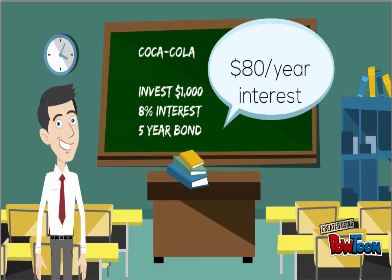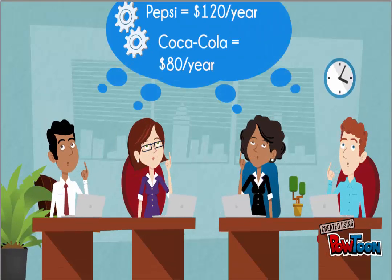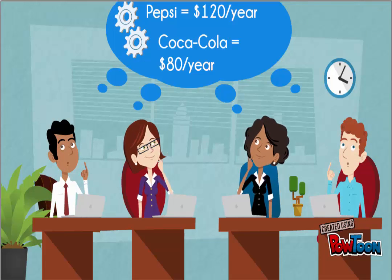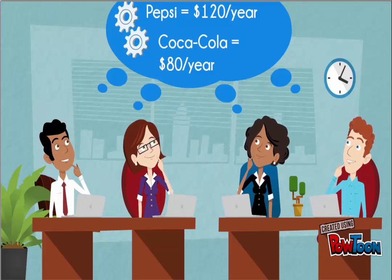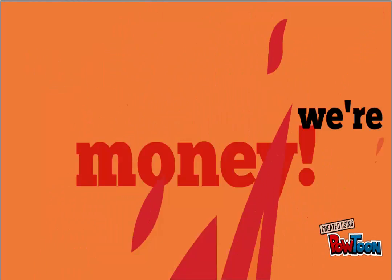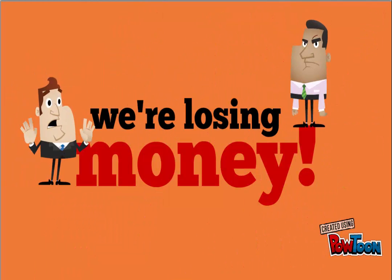So they're offering similar terms but the interest rate is significantly different. Being a smart investor, you're going to look at these two options and say: if I invest in Pepsi, I'm going to get $120 back a year, and if I invest in Coca-Cola, I will get $80 back a year. Which one would you choose? If you invest in Coca-Cola, you will be losing money — $40 per year.